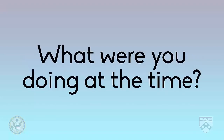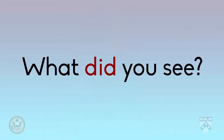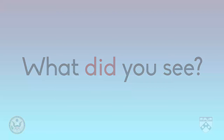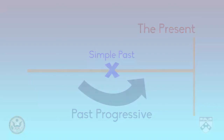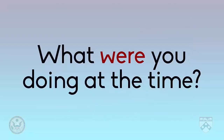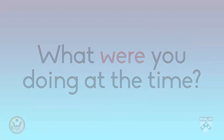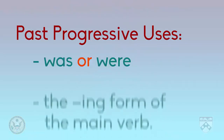For something that happens over a longer period of time in the past, we use the past progressive. For example: 'What were you doing at the time?' 'What' is our question word, 'were' is our helping verb, 'you' is our subject, and 'doing' is the main verb. You can tell that the form changed because of the helping verb and the main verb. The helping verb 'did' shows simple past, while 'were' with the -ing form of the main verb indicates past progressive — something that happened over a period of time in the past.